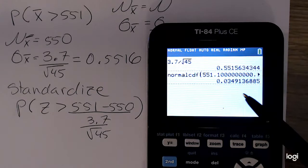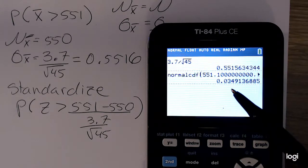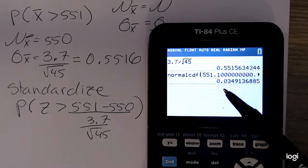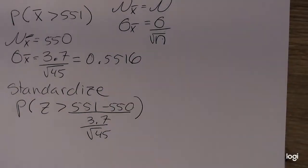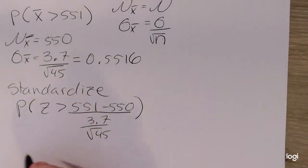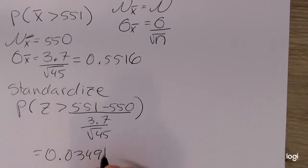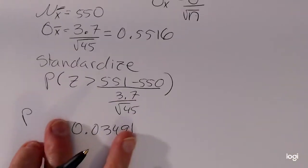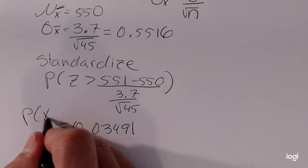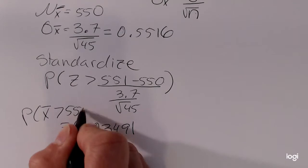So, that corresponding probability is pretty small. Rounding to 4 decimal places, that's 0.03491. Okay, so this is the probability that we get a sample mean greater than 551.